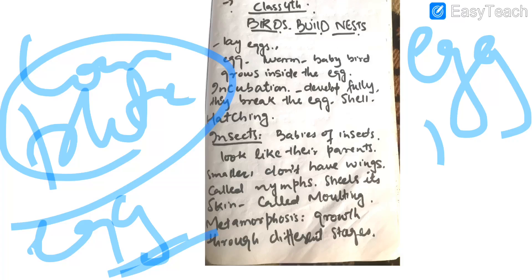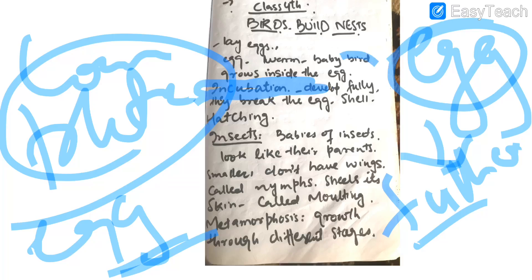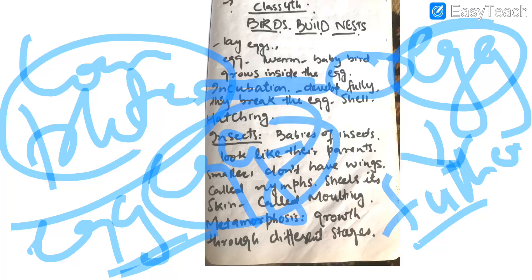In order to keep the egg warm, the father or the mother bird sits on the eggs to keep them warm, and this process is called incubation. Due to this warmth, when the baby bird gets fully developed inside the egg, it comes out of the egg shell, and that process is called hatching.